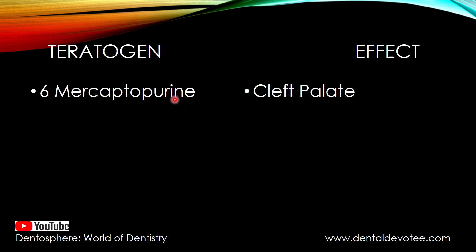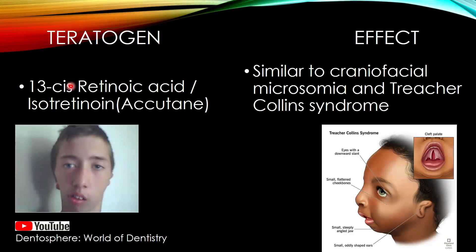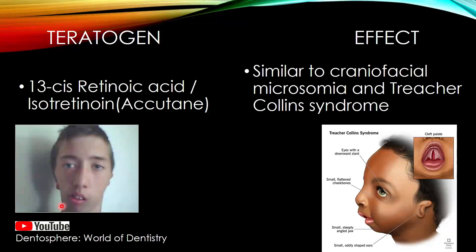Another teratogen is 6-mercaptopurine, which is also an anti-cancer drug; it may cause cleft palate. Retinoic acid, or isotretinoin — commonly known as Accutane — is used in acne treatment, and its effects are craniofacial microsomia and Treacher Collins syndrome-like effects. Craniofacial microsomia, also known as hemifacial microsomia or Goldenhar syndrome, is a condition in which one side of the face is less developed.